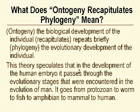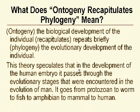This theory speculates that the human embryo, when it develops in the womb, passes through the evolutionary stages that were encountered in the evolution of man. In other words, you start out as a protozoan, and then you evolve into a worm,